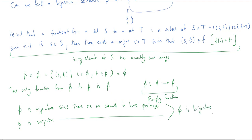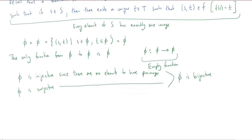So in fact there is a bijection between the empty set and itself. This generalizes our definition a bit — it makes sense to say the cardinality of the empty set is zero, and the empty set is a finite set.